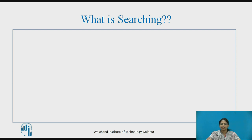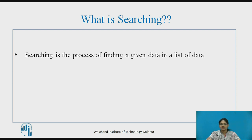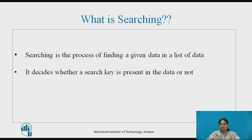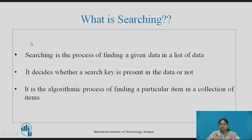Let us see what searching is. Searching is the process of finding a given data in a list of data. It decides whether a search key is present in the data or not. It is the algorithmic process of finding a particular item in a collection of items.